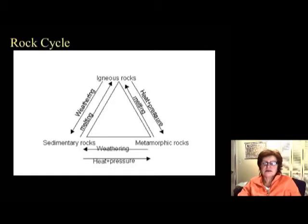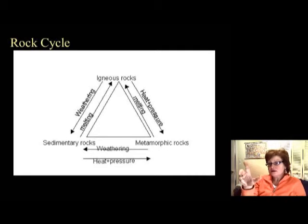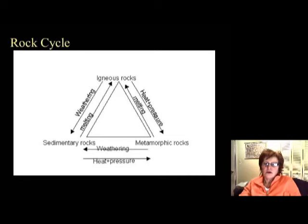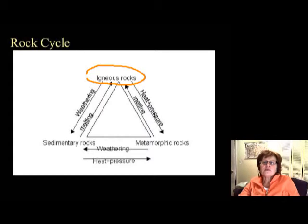This slide shows the rock cycle. This is a very simplified version of the one in the book. I used three keywords for each rock group, and you have to understand that every rock can become every other rock at any time. I start with igneous rocks because igneous rocks were the earliest rocks on Earth, when Earth was molten and then started to cool down. The keyword for igneous rocks is melting.